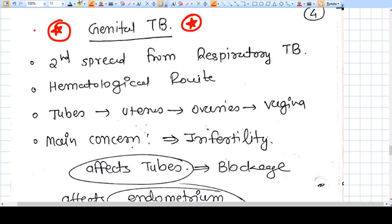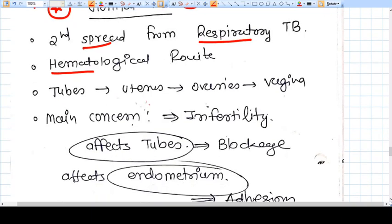Or with oligomenorrhea. It's basically a secondary spread from respiratory TB by hematological route. What structure does it affect? It affects the mucosas, just like mucosa of tubes, fallopian tubes, uterus, that is endometrium, ovaries, and vagina.